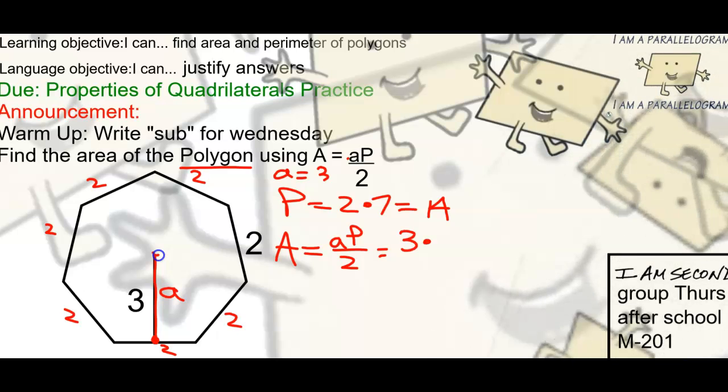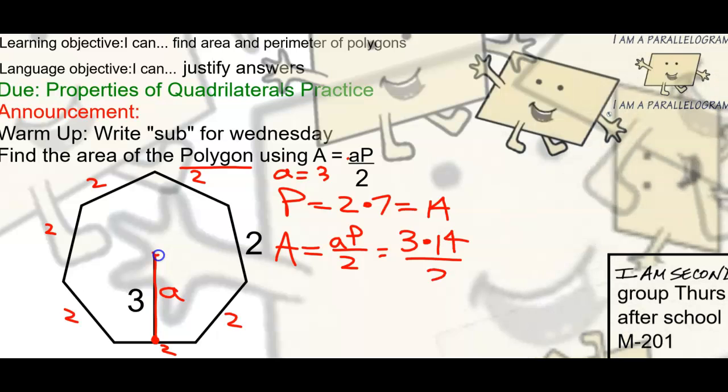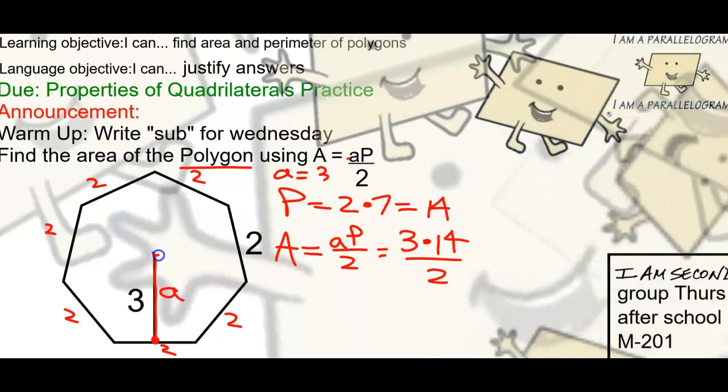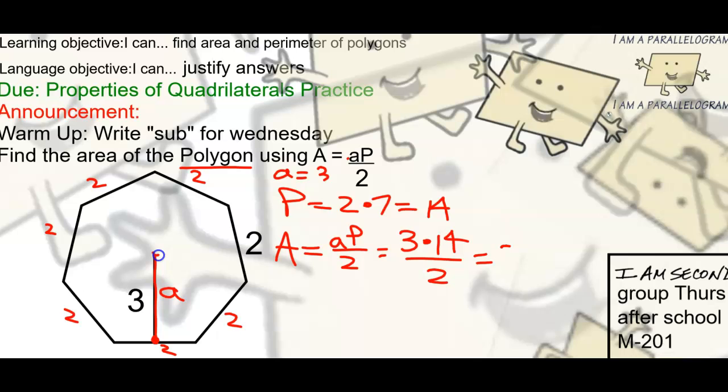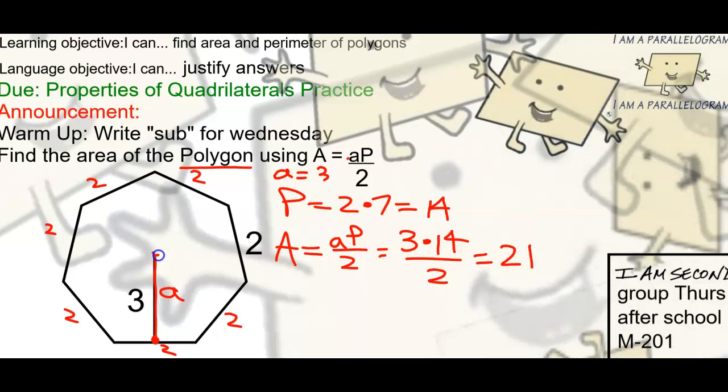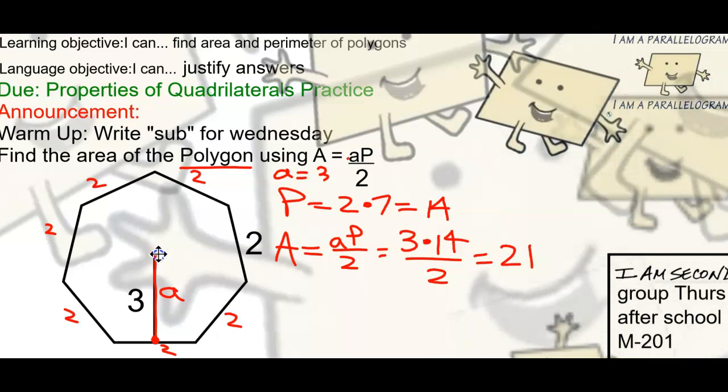Some people do 3 × 2, but 2 is not the perimeter. It's part of it. Anyway, 3 × 14 / 2 equals 21 units squared.